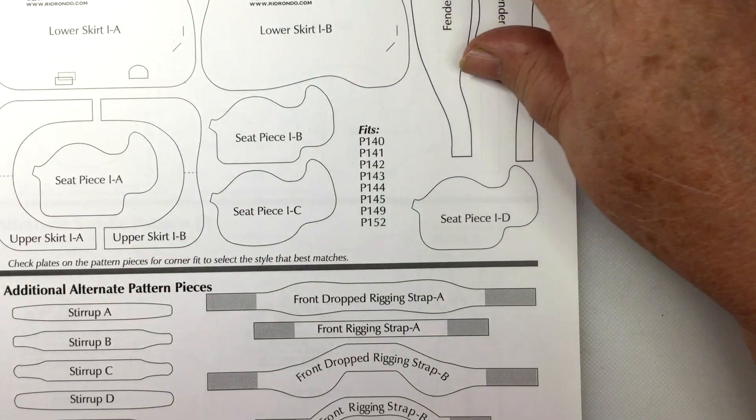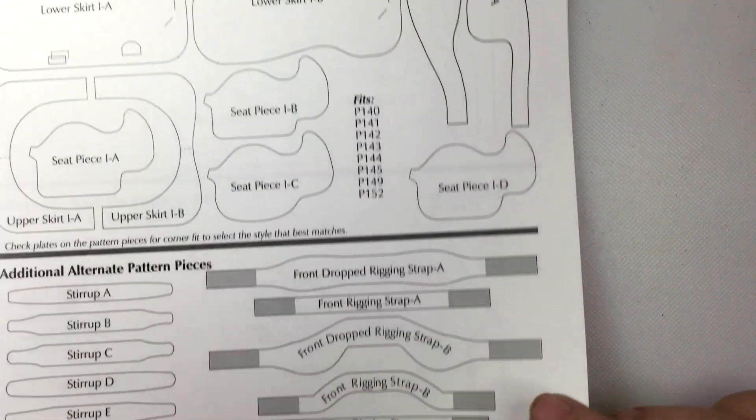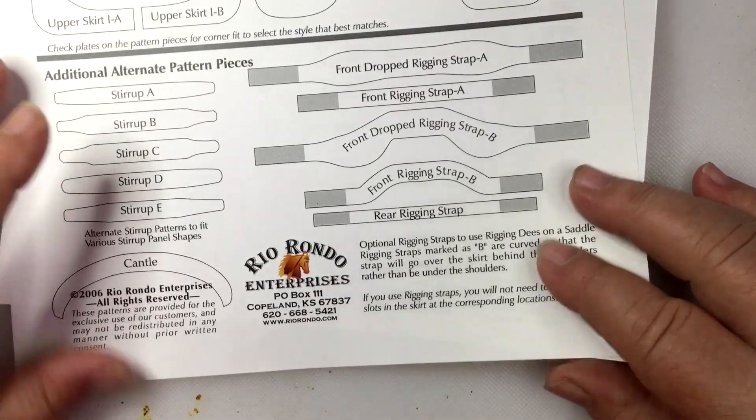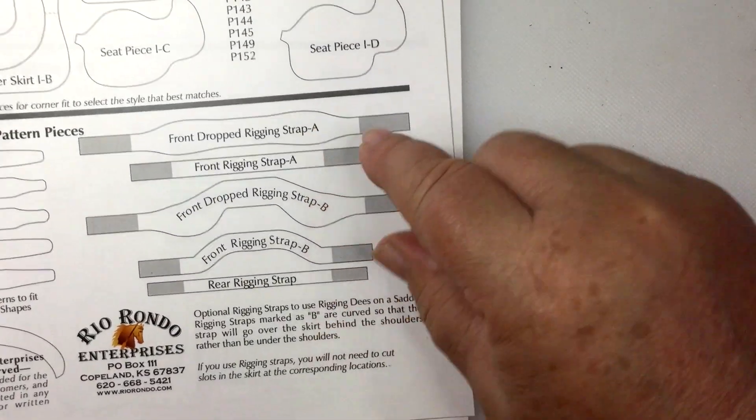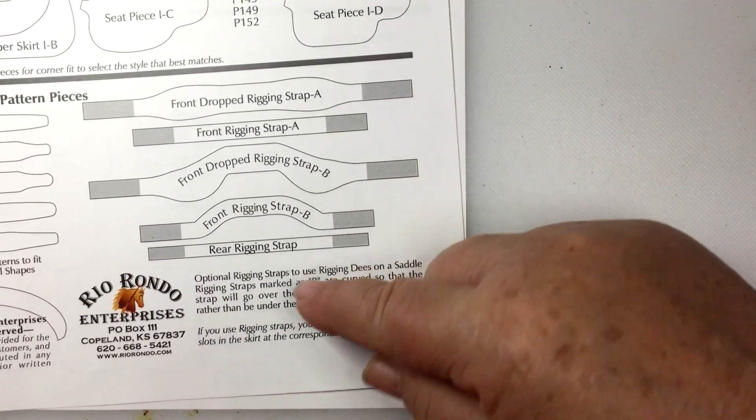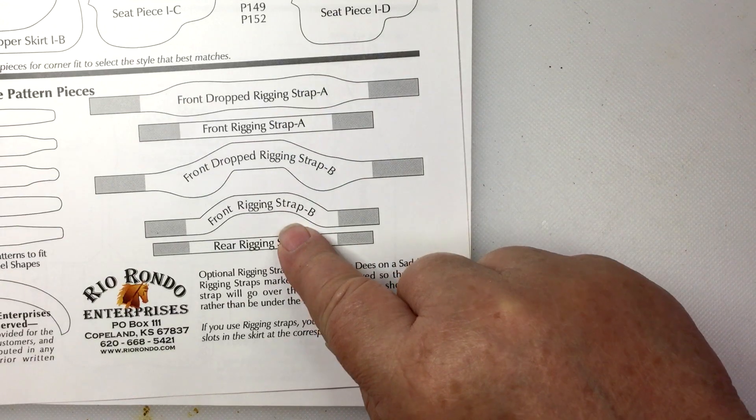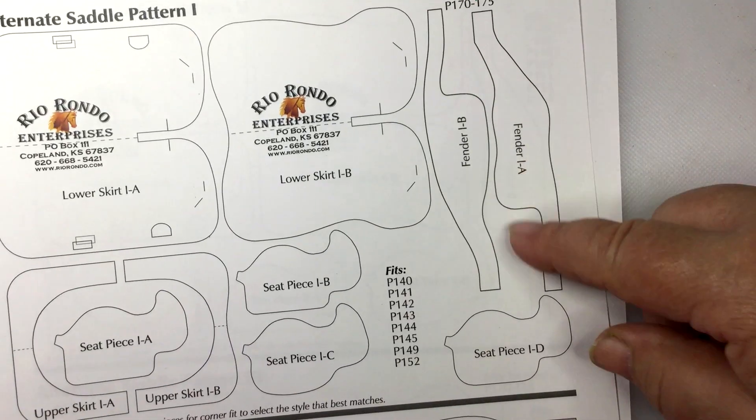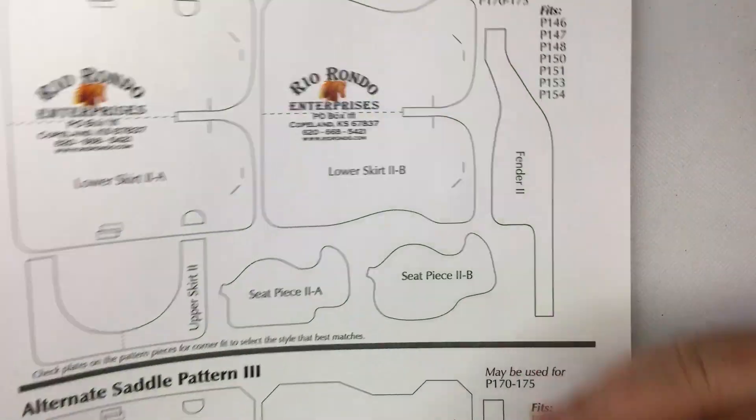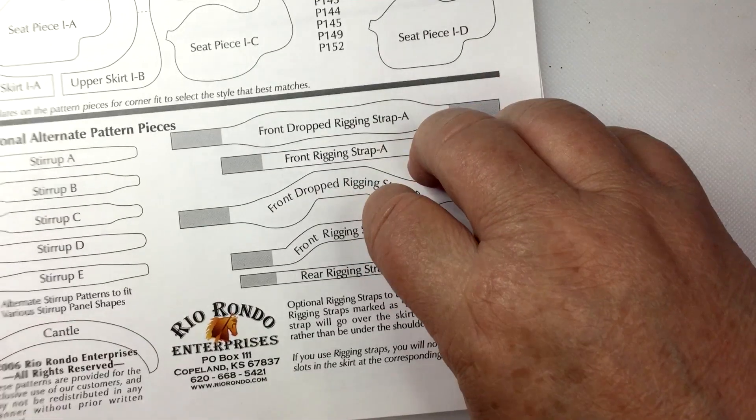They have available on their website a couple of PDFs. This is 2006 when I downloaded that one. Alternate saddle patterns to fit edged corner plates. You don't cut these here if you're going to use this, so you don't need the reinforcement panels. These are all alternate stirrup shapes, alternate cantle. It's kind of cool. And then rigging.